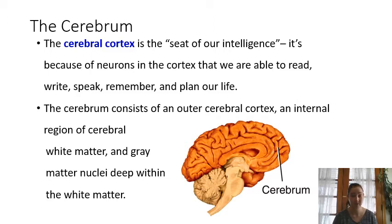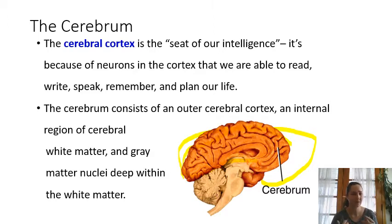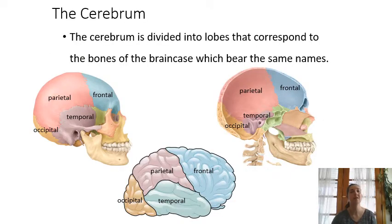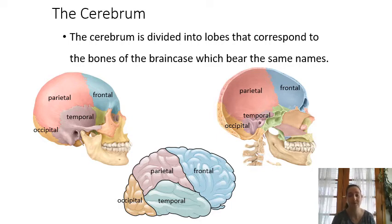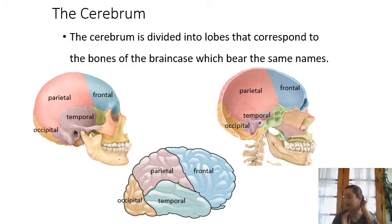Moving on to the cerebrum itself — the largest part of the brain, which is that highly folded structure you picture as your brain. This is where higher level thinking comes in, including your ability to speak, understand, and problem solve. That all comes from the cerebral cortex — the highly folded outer portion of the cerebrum. The lobes of the cerebrum are named after the bones they sit beneath: frontal, parietal, temporal, and occipital.